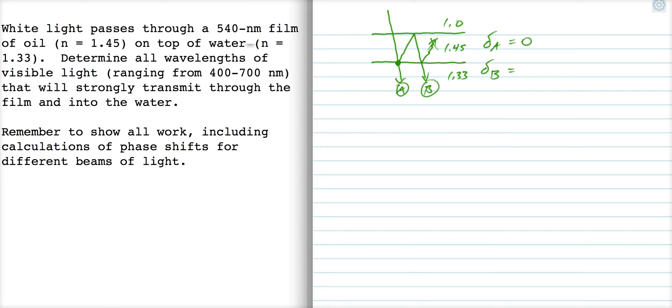Now, this boundary, the index that this wave is in is greater than the index it's going into or that it reflects off of. So that first reflection phase shift is zero. The second reflection phase shift up here, it's again in a higher index. So that's also zero.